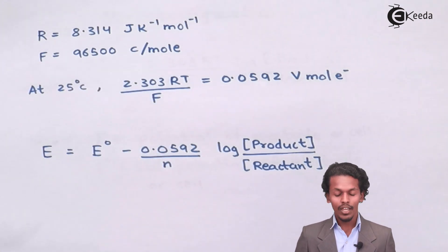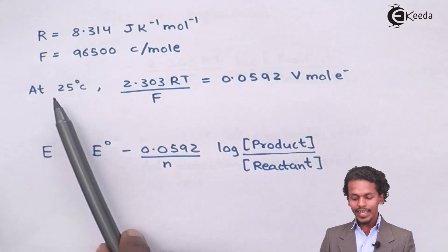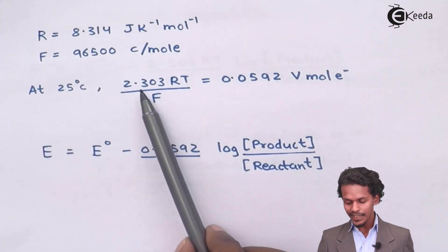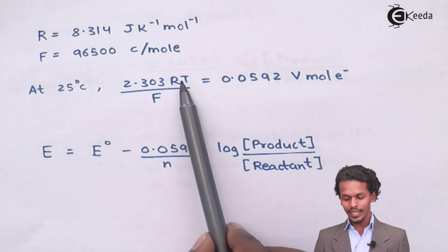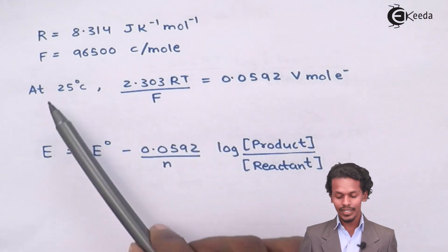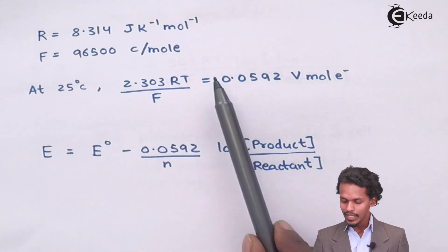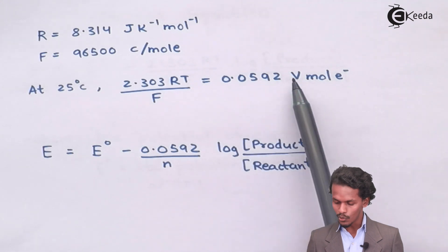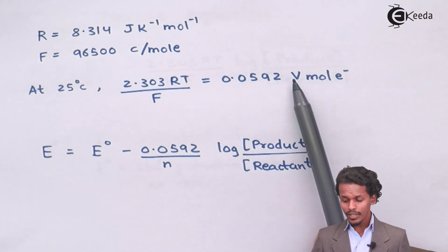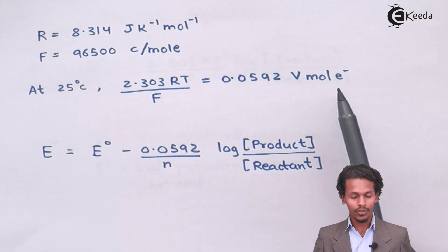So at 25 degrees Celsius, 2.303 into R into T divided by F, if we calculate this, we will get a value of 0.0592 V mole of electrons.